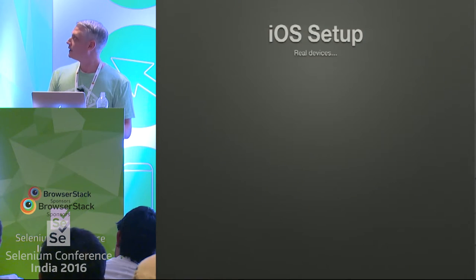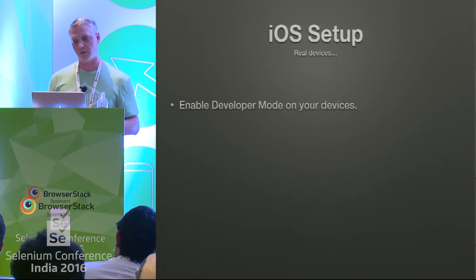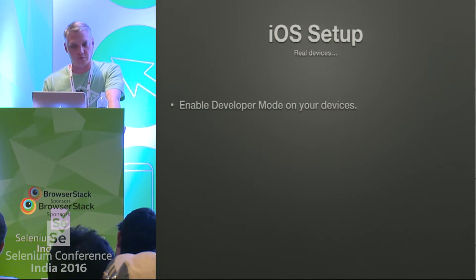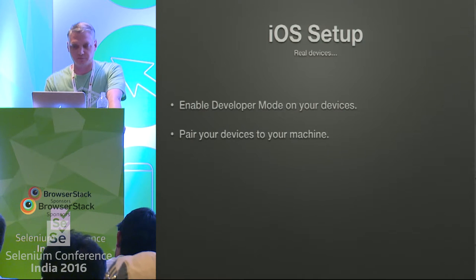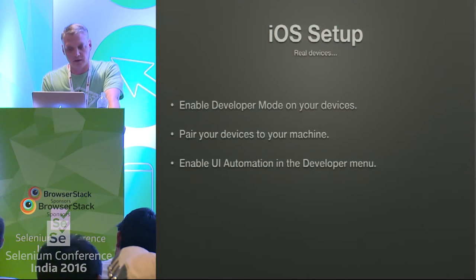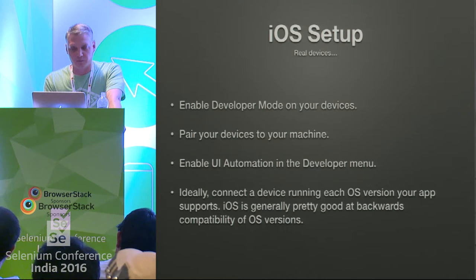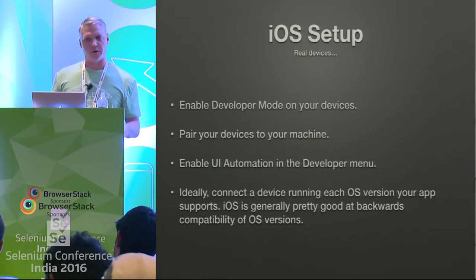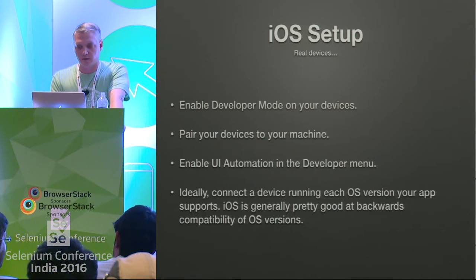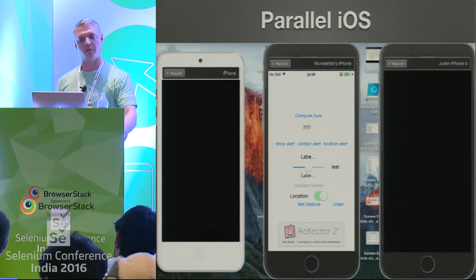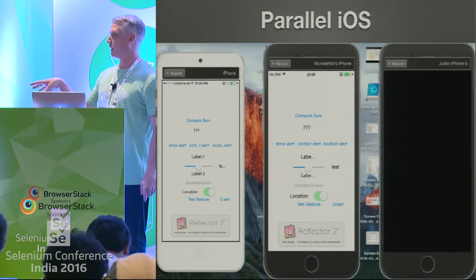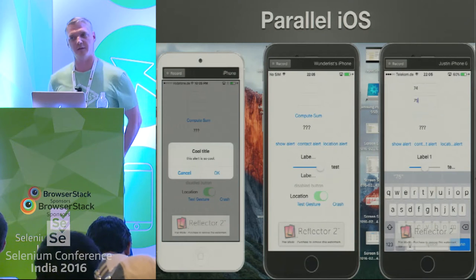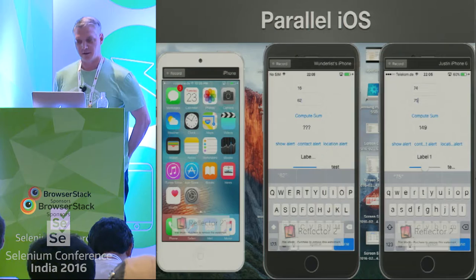For iOS, this setup is for real devices only — you can't do it technically with simulators, but that's quickly changing. If you're going to use real devices, you have to enable developer mode, pair your device to your machine just like with Android, and enable UI Automation in the developer menu. Ideally connect every OS version your app supports. iOS is generally pretty good with backwards compatibility compared to some Android versions.